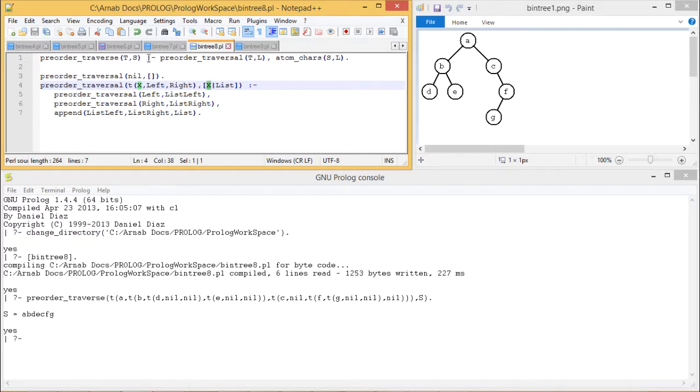As a result of that, we shall be getting the pre-order traversal of the given tree T. And here atom curves, this L has been passed here. So S will be produced and this S is the required output of our pre-order traversal. In this way, the code has been written and has been found that it is giving us the correct result. Thanks for watching this video.